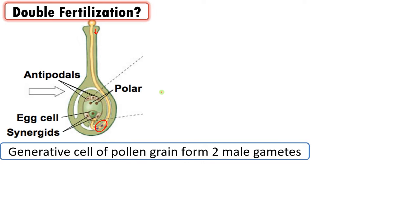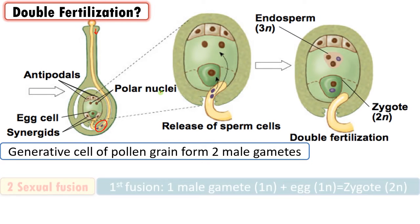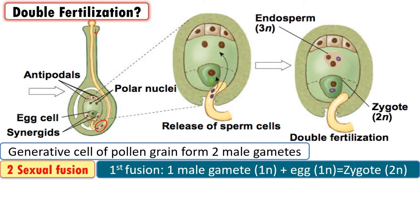In angiosperms, as there are two gametes, there are two sexual fusions. The first fusion is one of the male gametes fusing with the egg to form a diploid zygote. This zygote later divides by mitosis and forms the embryo.